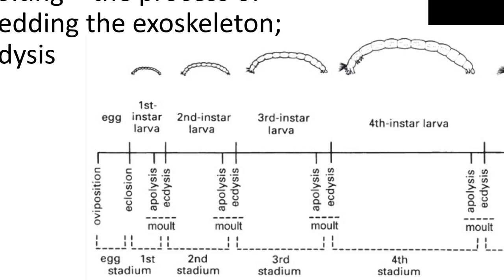Each growth stage, or the form of the insect between two successive molts, is called an instar. A stadium is the time period spent in a particular life stage. The process of molting is controlled by juvenile hormone produced in the corpora allata. How big the instar gets in the time between molts depends on food supply, temperature, larval density, physical damage like the loss of limbs, and the sex of the species.